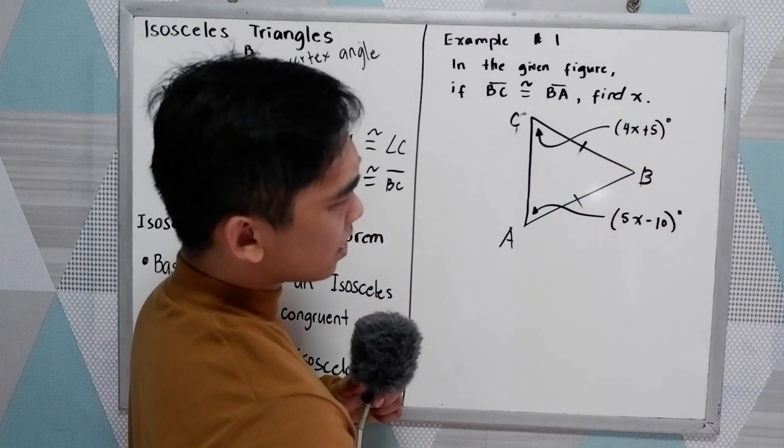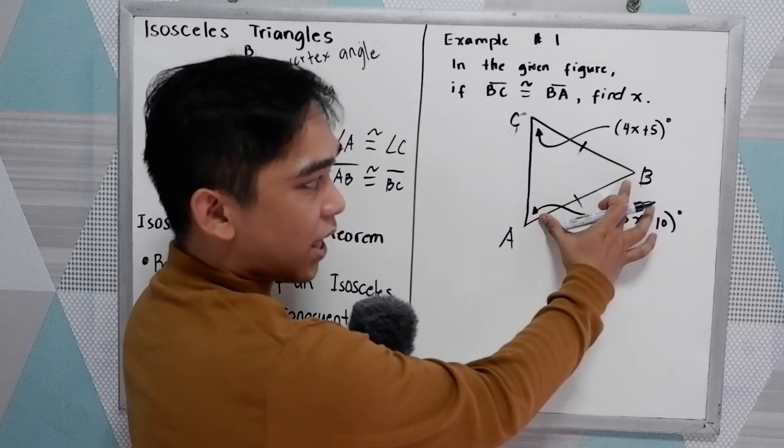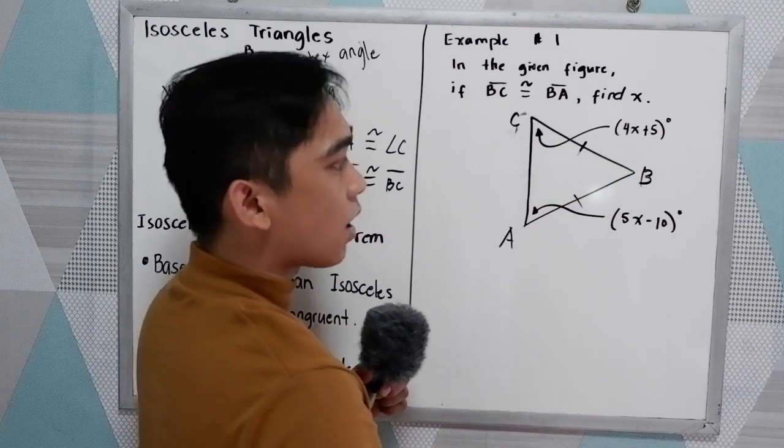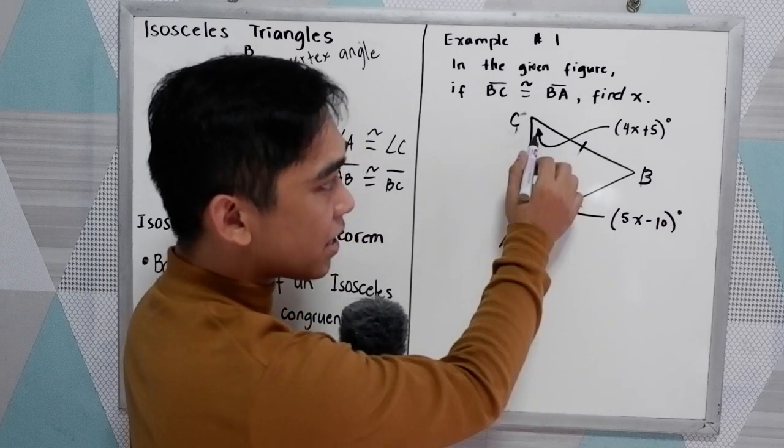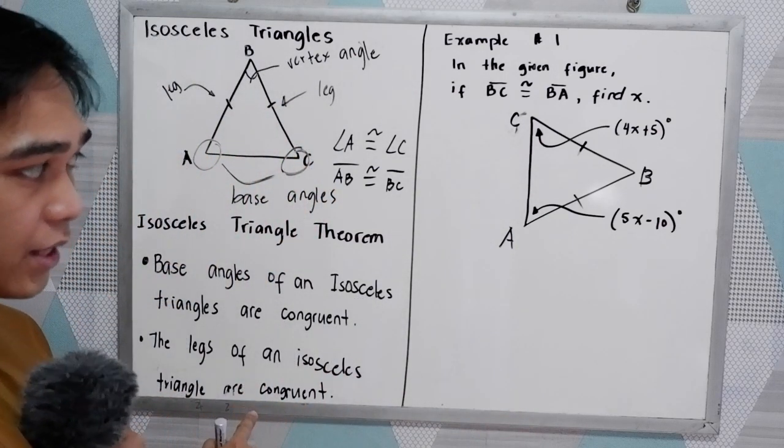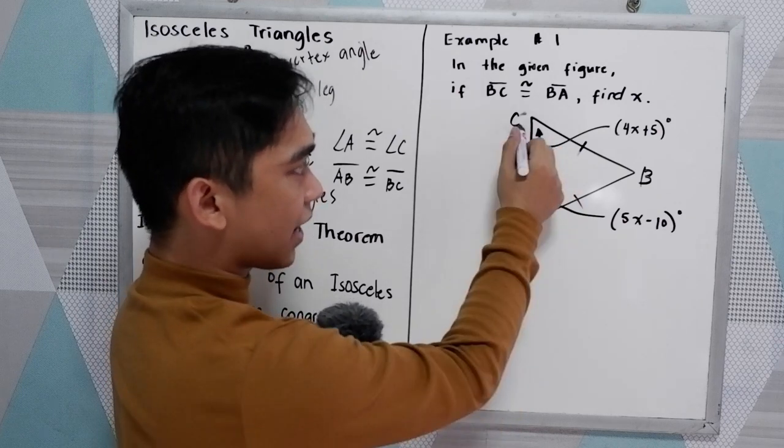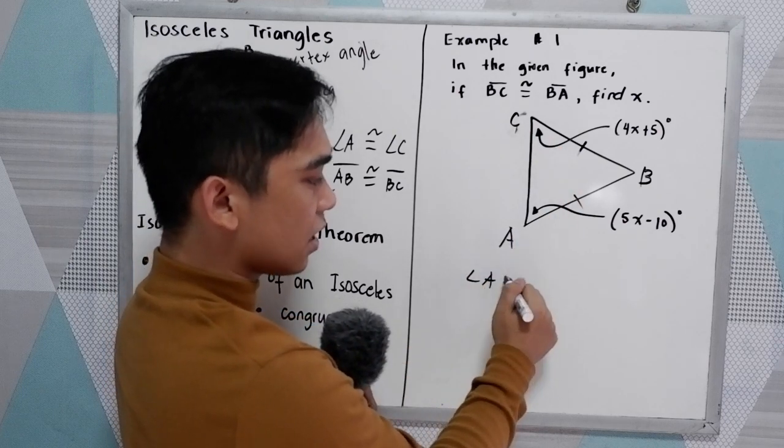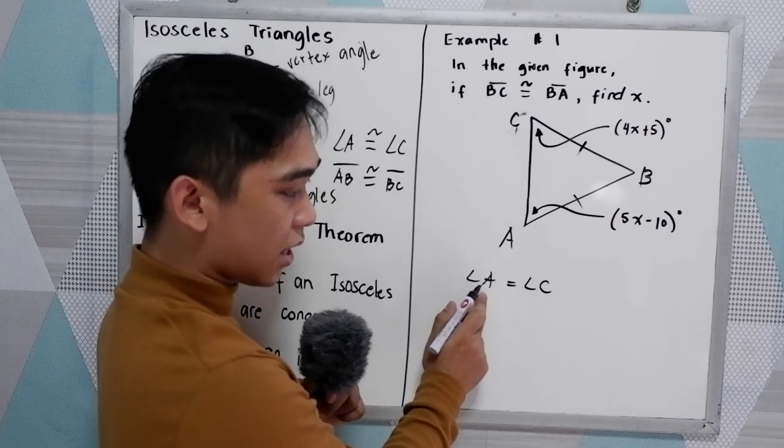So in this case, this will lead to isosceles triangle. Because the two legs are equal. Now we have the given base angles. So in our theorem, base angles are congruent. So our base angle here is angle C and angle A. So angle C is equal to angle A.